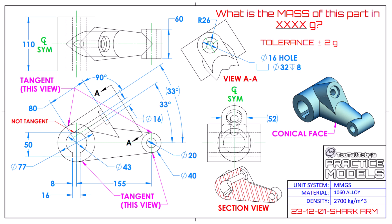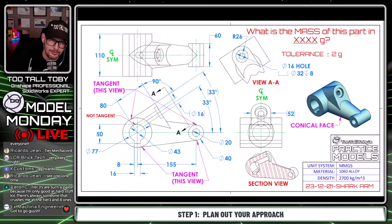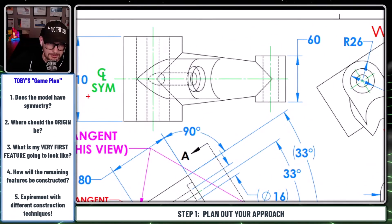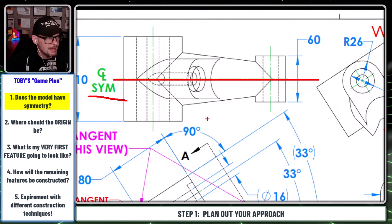This one was called Shark Arm because it looks like a shark. We saw this one in a tournament, and whenever I'm looking at a 3D model, I always kind of go through the same steps. The first thing I do is I look at the model and I ask myself: does the model have symmetry?